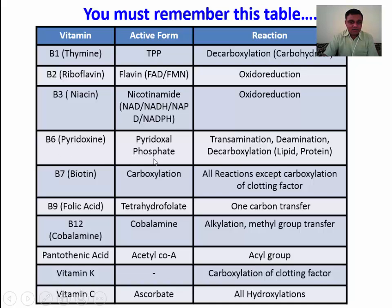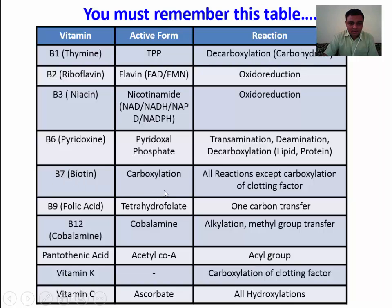B6 is very important. It acts as pyridoxal phosphate and is utilized in many reactions in the body, like transamination and deamination in protein metabolism, and decarboxylation in lipid and protein metabolism. You must remember: when decarboxylation occurs in carbohydrate metabolism, such as pyruvate, the coenzyme is thiamine. When it is a matter of lipid and protein metabolism, decarboxylation requires pyridoxine. Biotin, also known as B7, is used for all carboxylation reactions in the body.